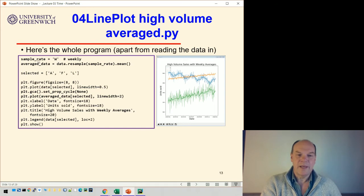Here's the whole program to do this. I've set the sample rate to W and created this averaged data by resampling the data. This averaged data contains all 25 products, but at the moment we're just going to only draw these three.